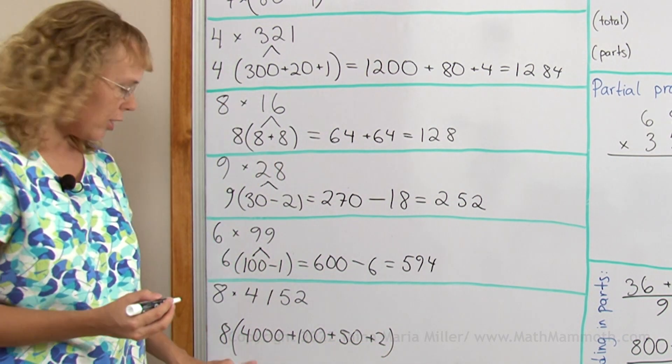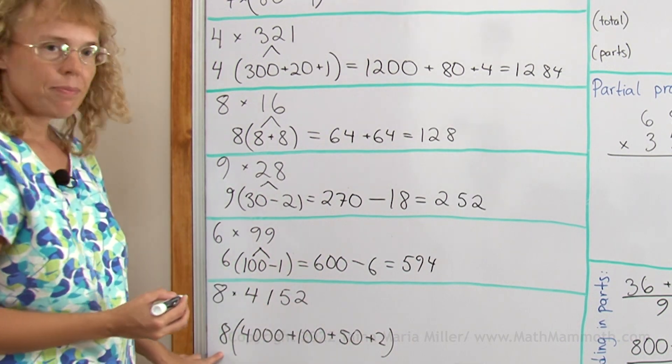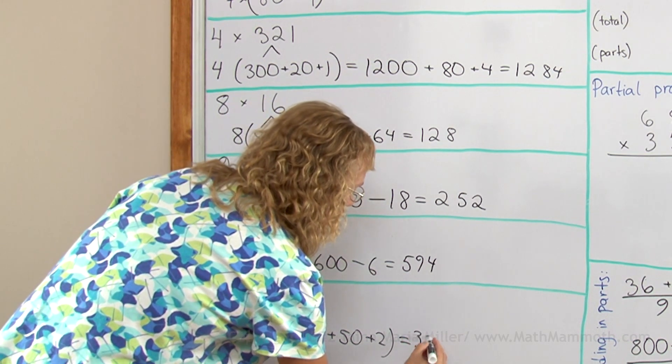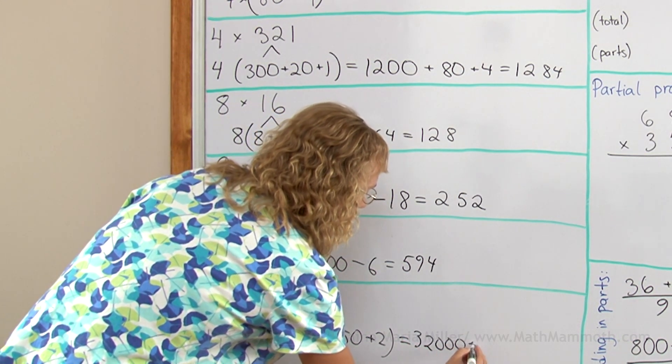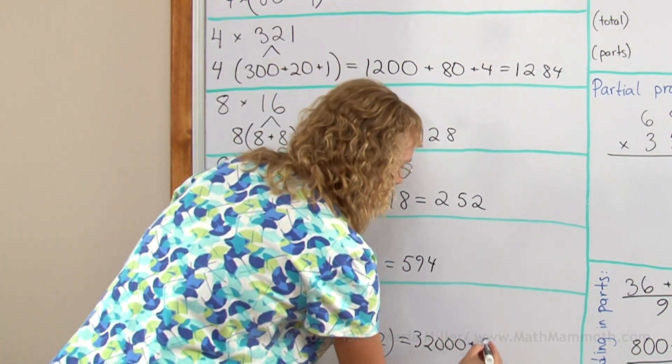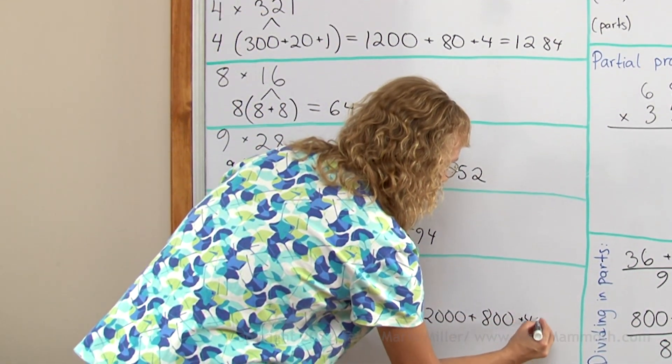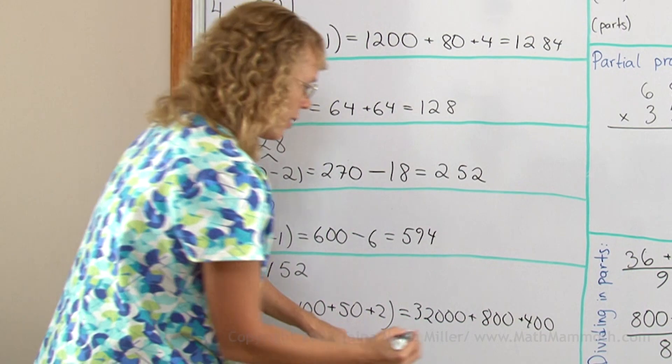And now multiply each part here separately, and then add the parts like we've been doing. 8 times 4000 is 32,000. Then 800, and then 400, and then 16.